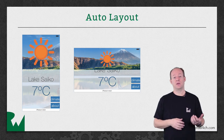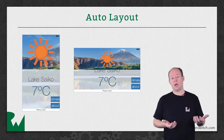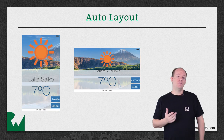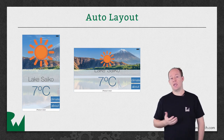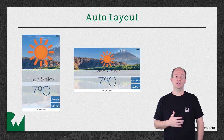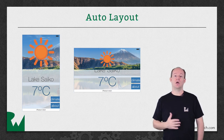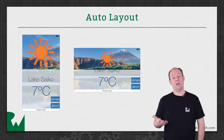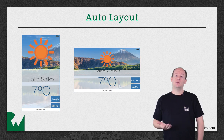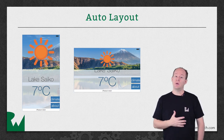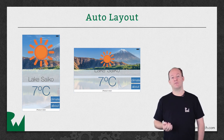Auto Layout goes hand-in-hand with Adaptive Layout. But Auto Layout alone doesn't solve the whole problem. If you've tried using only constraints to handle portrait and landscape orientations on one iPhone screen size alone, you've seen how difficult that can be. The constraints can get complex pretty quickly, and you're almost certainly going to have to write some code to tweak the layout once you add iPad into the mix.